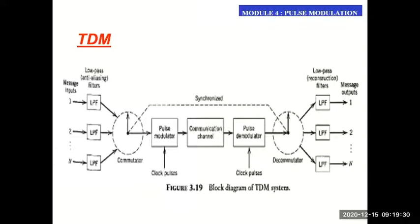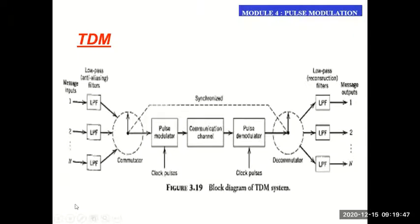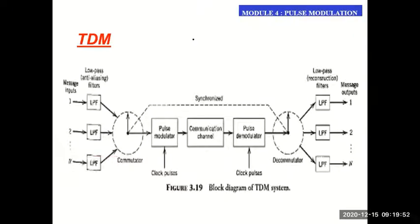Let's move on to understanding Time Division Multiplexing, or TDM. TDM is another form of multiplexing. We had already used FDM — Frequency Division Multiplexing — when we studied amplitude modulation. TDM is the second version of multiplexing, where time is divided into slots and different signals are sent in different time slots.